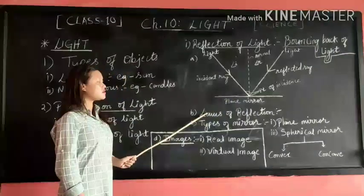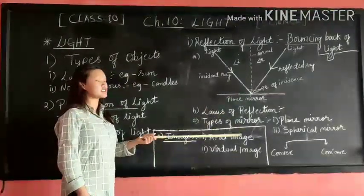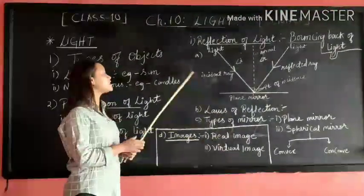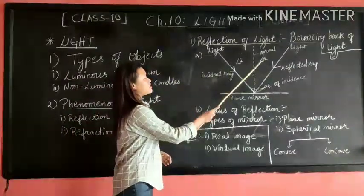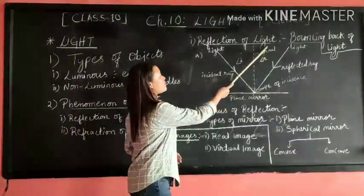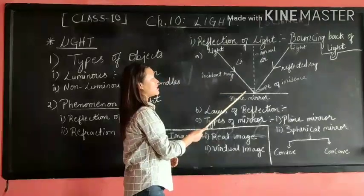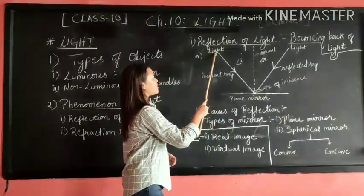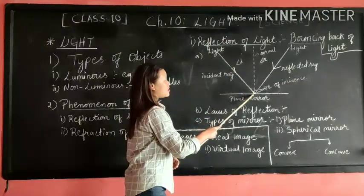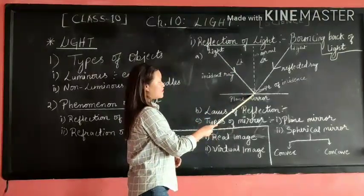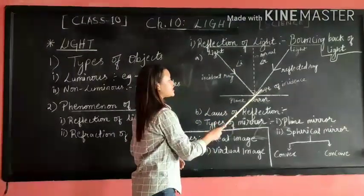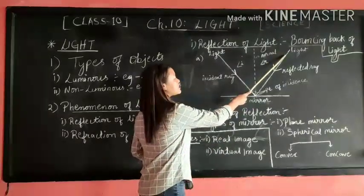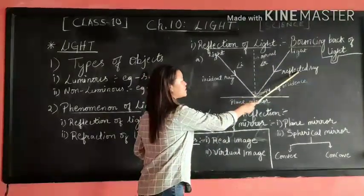There are laws of reflection. The first law states that the incident ray, the reflected ray and the normal all together lie on the same plane. Since the light coming from the medium strikes on the surface at point of incidence, it reflects back from the same plane. That is known as a reflected ray.